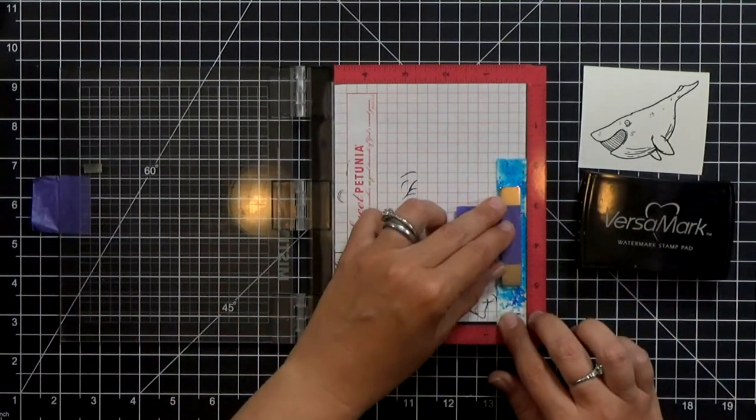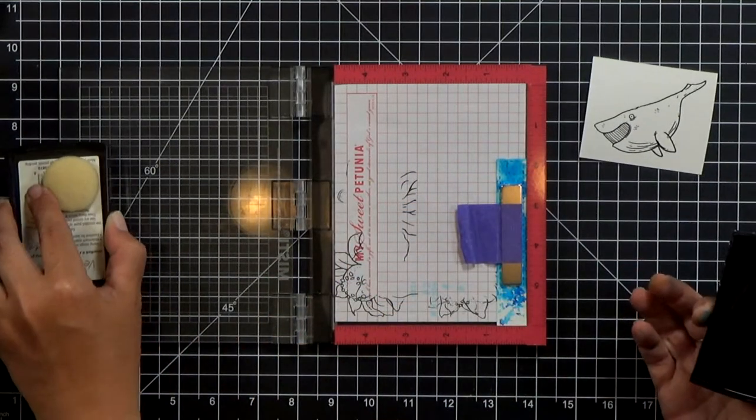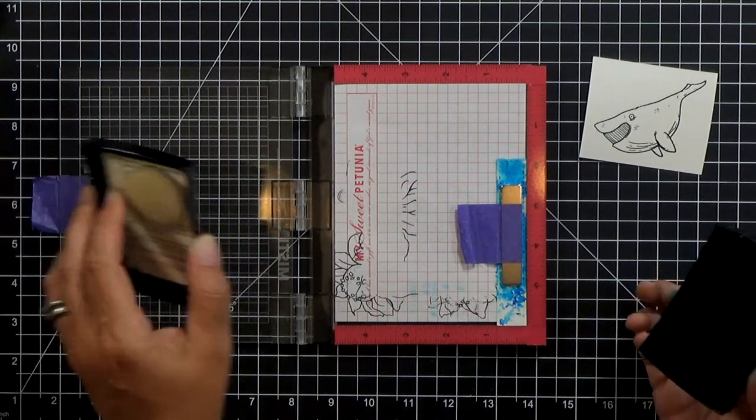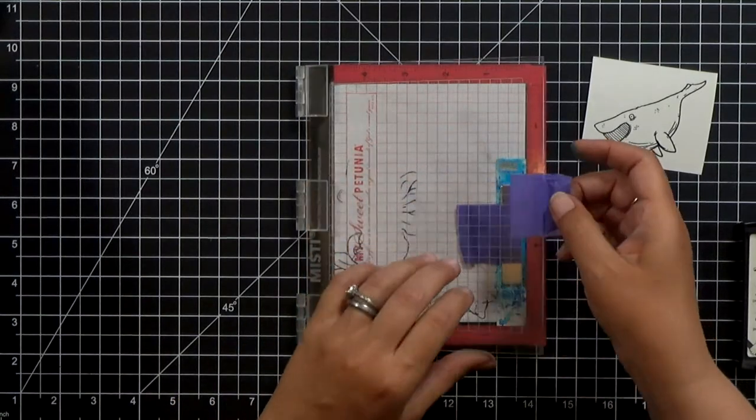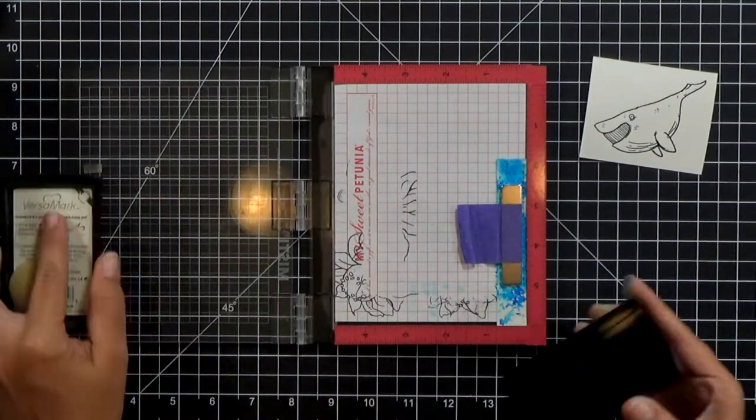It's clear and sticky and I'm also going to switch out my embossing powder to a white embossing powder instead of the clear and I stamped it twice.